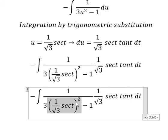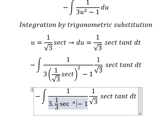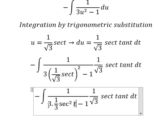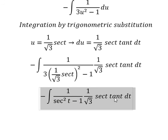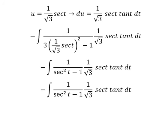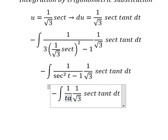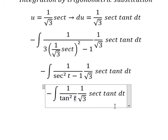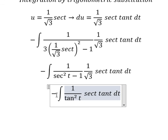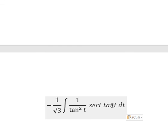We change the expression, dividing, and sec²(t) minus 1 we change for tan²(t). And we put this one outside — tan(t).